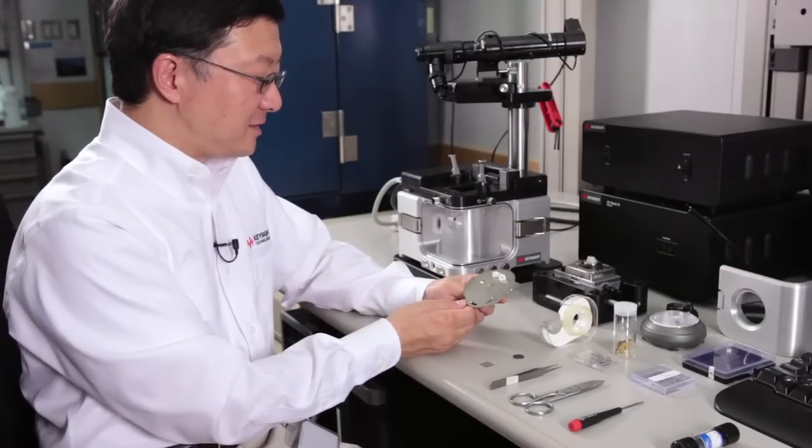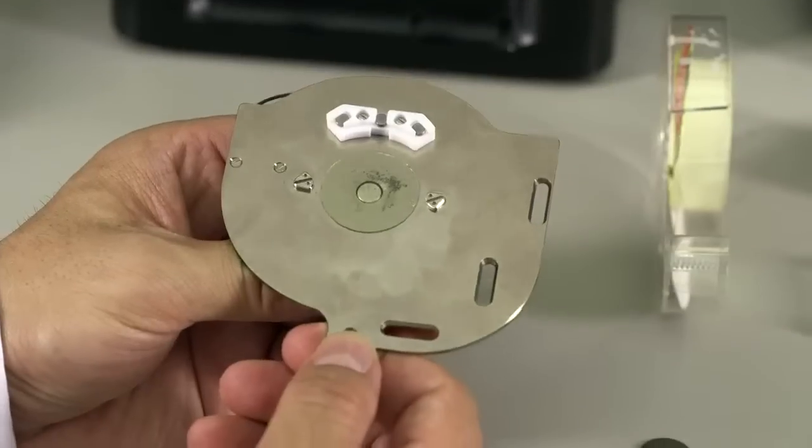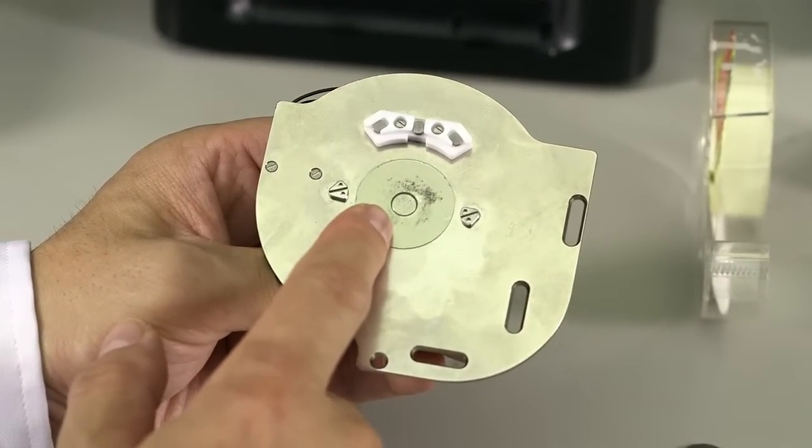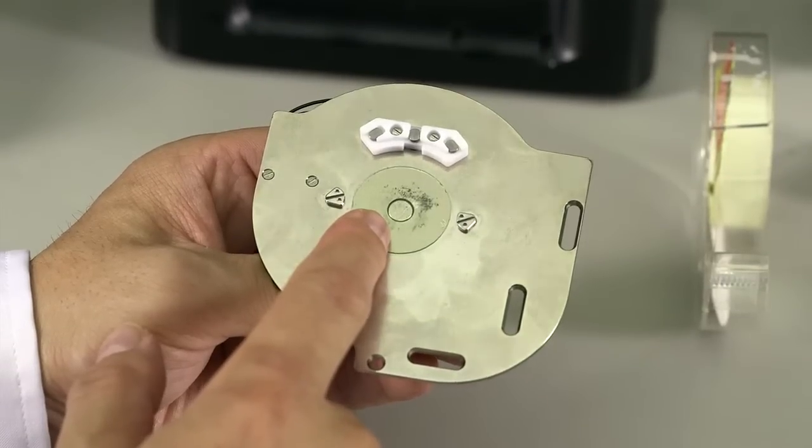This is the AFM's basic sample plate. In the center of the sample plate, there is a magnet to allow you to assemble your sample dish on top of it.